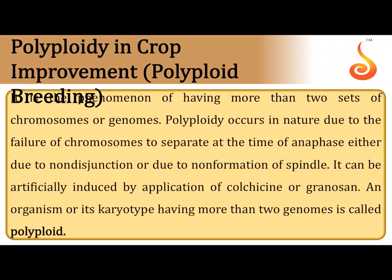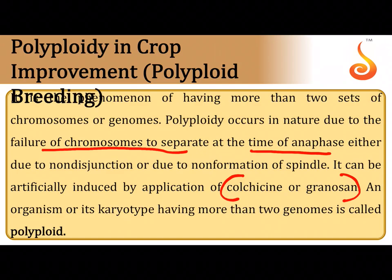Polyploidy refers to plants with more than two sets of chromosomes. It is induced by disrupting the mitotic spindle during anaphase using chemicals like colchicine or granosan. When the mitotic spindle is disrupted during cell division, the cell ends up with double the number of chromosomes. An organism with more than the diploid number of chromosomes is called a polyploid.